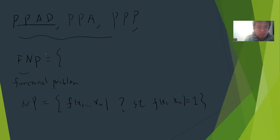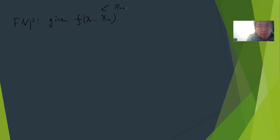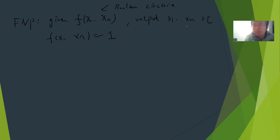So FNP is basically this: given a boolean circuit, you need to output one solution — you need to output x1...xn such that F(x1,...,xn) = 1. Notice that there may or may not be a solution, but this is like the NP complete problem. So basically it's the search problem for NP complete.